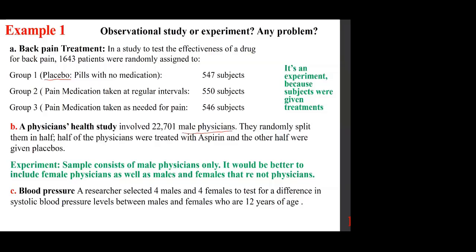Blood pressure: a researcher selected four males and four females to test for a difference in systolic blood pressure levels between males and females who are 12 years of age. That is an observational study. The problem is the sample size is too small — if you're checking blood pressure, you really want a much larger sample size than just four males and four females.